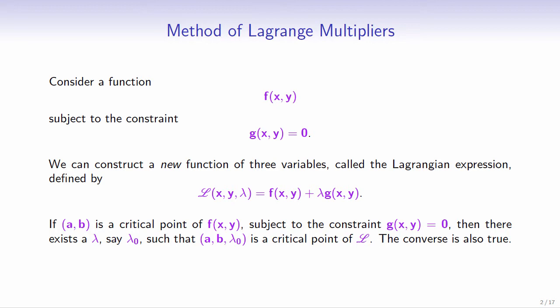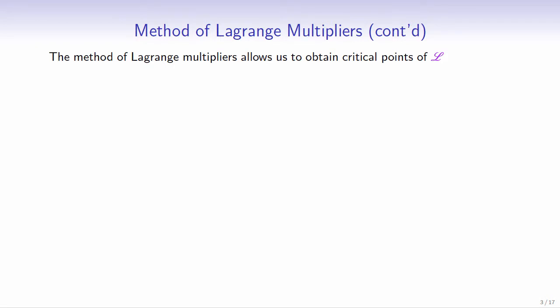That is, if (a, b, lambda naught) is a critical point of L, then (a, b) is a critical point of f subject to the constraint g equals 0. The method of Lagrange multipliers allows us to obtain critical points of L, which helps us maximize or minimize the function f.